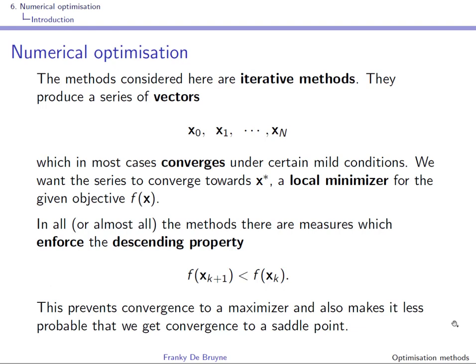In this section we consider numerical optimization. The methods are iterative, starting from an initial vector x0. These methods produce a series of vectors x1 to xN that hopefully converge to a local minimizer x* of the objective function. Under certain mild conditions, these methods usually enforce a descending property so that the cost decreases with increasing index k.